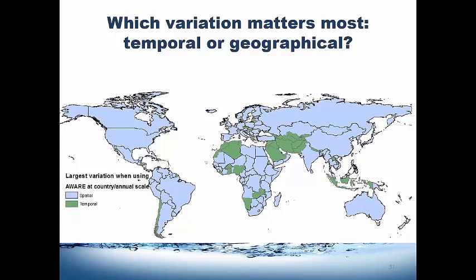The regions shown in blue have the largest spatial variation, so if consuming water in those regions it would be more important to look at which specific watershed you're consuming in rather than which month. The regions shown in green are the other way around — the temporal variation is larger there, and it's more important to look at which month you're consuming in rather than which specific watershed.